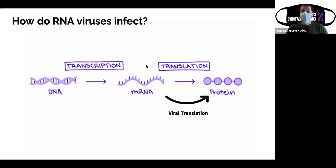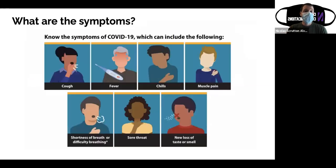There are two simple processes: one that turns DNA into mRNA called transcription, and one that turns RNA into protein called translation. How SARS-CoV-2 infects the cell is by hijacking this translation mechanism and using host cell molecules to replicate its own genome and proteins and make more of itself. Once infected, you begin to present a number of symptoms.